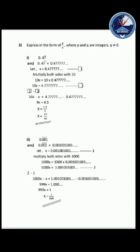Same way for the second question. Question given: 0.001 bar. The bar is above the three numbers: 0, 0, 1. So here three numbers are repeating. The number is 0.001001001 etc., continuing like that. Let X equal to 0.001001 etc. - that is equation number one. Since three numbers are repeating, multiply by 1000. So 1000X equals 1.001001 etc. - that is the second equation. Second equation minus first: 1000X minus X equals 999X equals 1. So X equals 1/999.